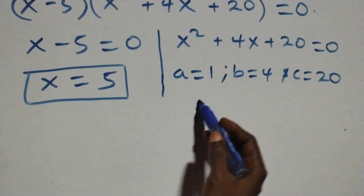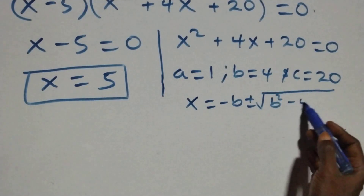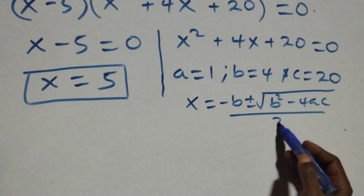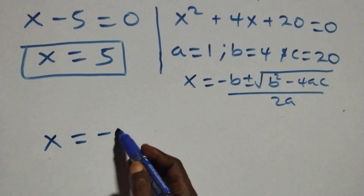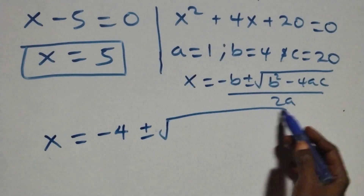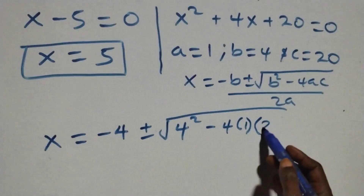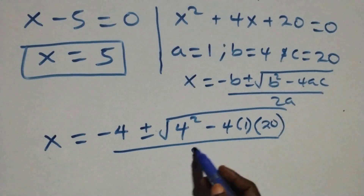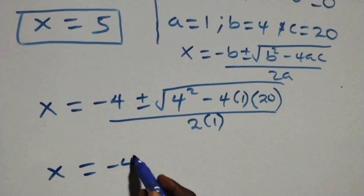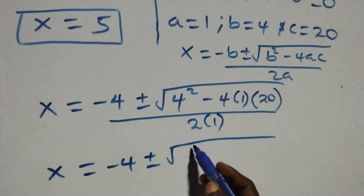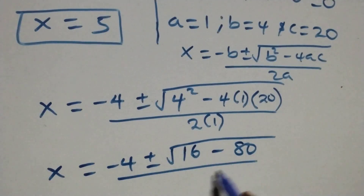Applying the quadratic formula, which is x equals to minus b plus or minus square root of b squared minus 4ac, over 2a. Then here what we have becomes x equals to minus 4 plus or minus square root of 4 squared, which gives us 16, then minus 4 times 1 times 20, we have 80, over 2a.